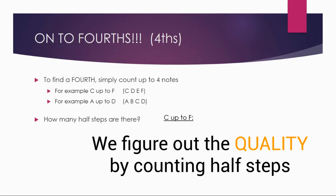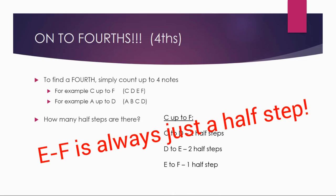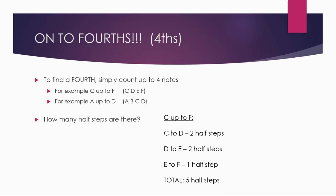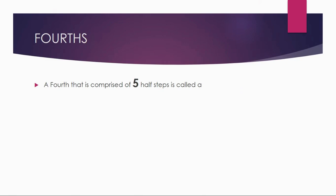C up to F: C to D is two half steps (a whole step), D to E is another whole step (two more half steps), and E to F — remember, E to F is automatically a half step. So C up to F is five half steps. What about A up to D? A to B is a whole step (two half steps), B to C is already a half step (just one), and C to D is a whole step (two more). So A to D also contains five half steps. A fourth comprised of five half steps is called a perfect fourth.